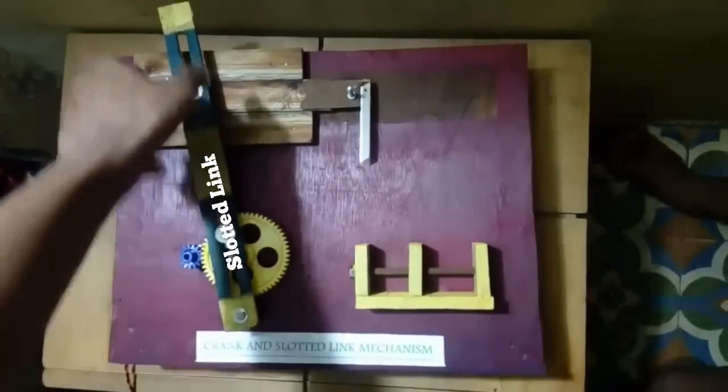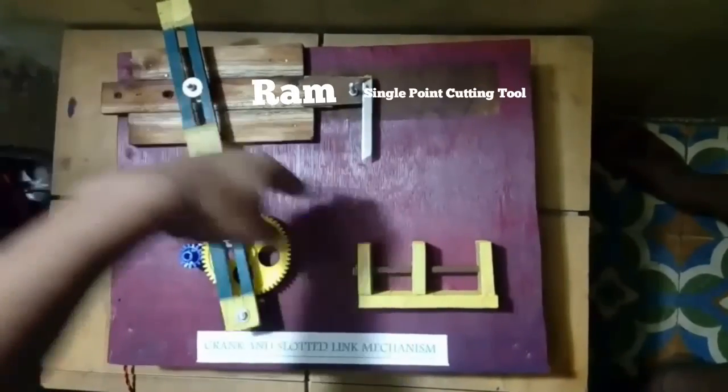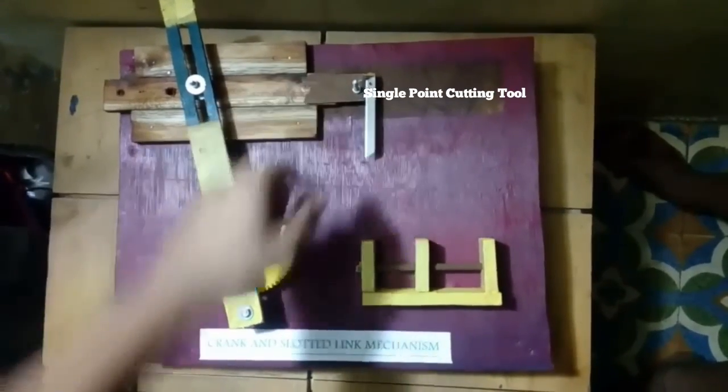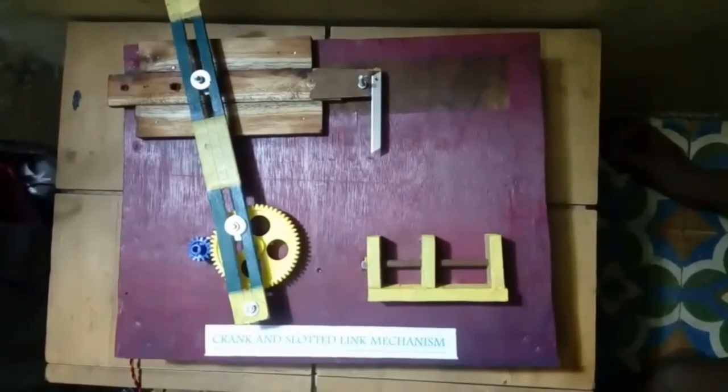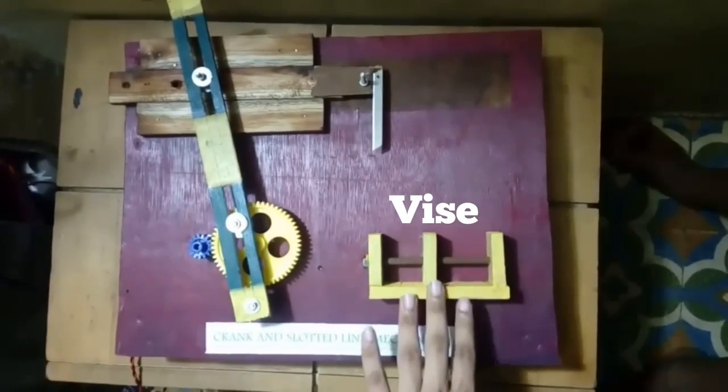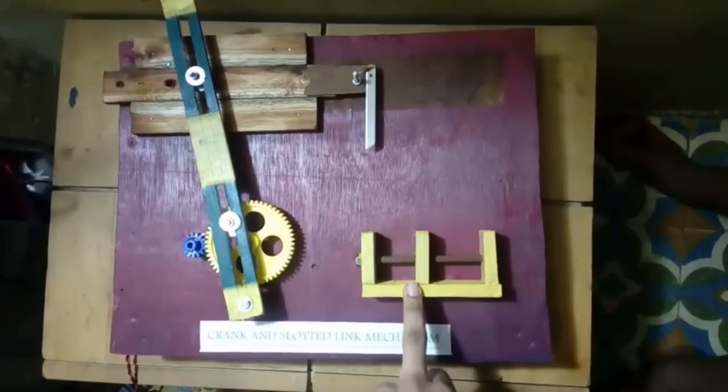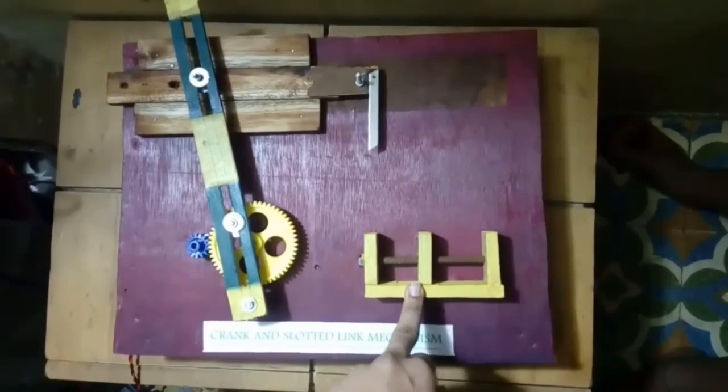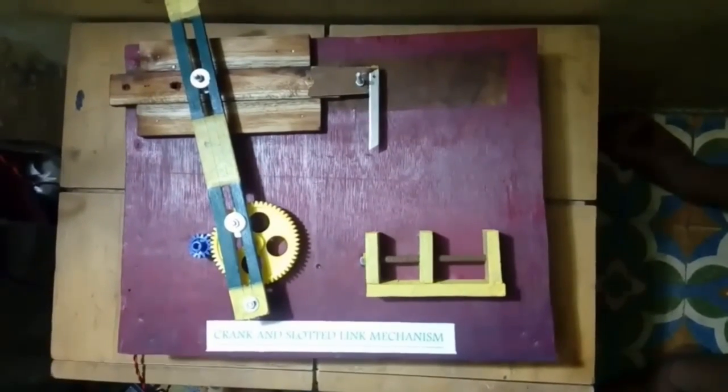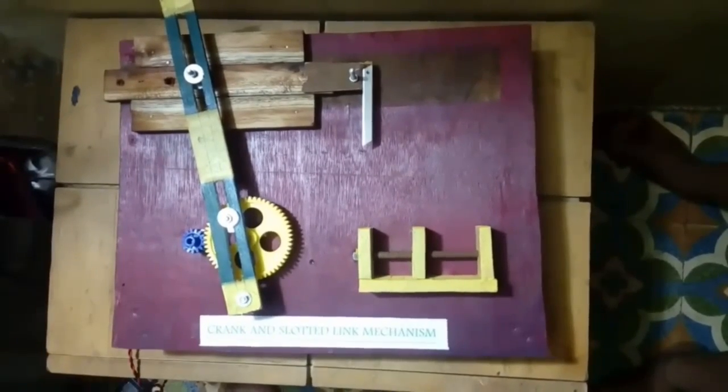The slotted link is further connected to a ram, and at the end we have a single point cutting tool. The third component is a vise, which is used for mounting and holding a job during the cutting process. Metals can be shaped vertically, horizontally, or at an incline.